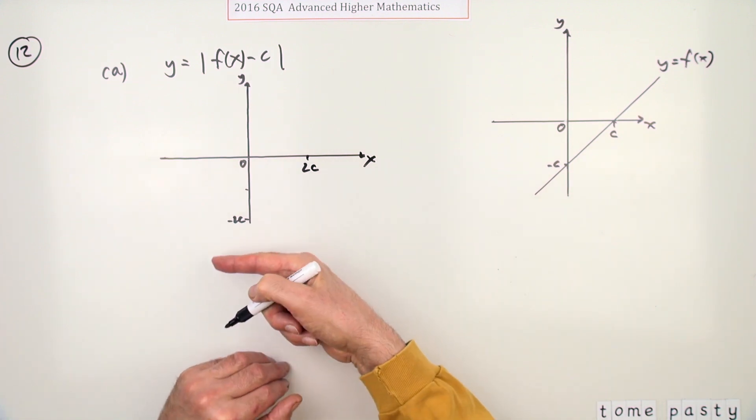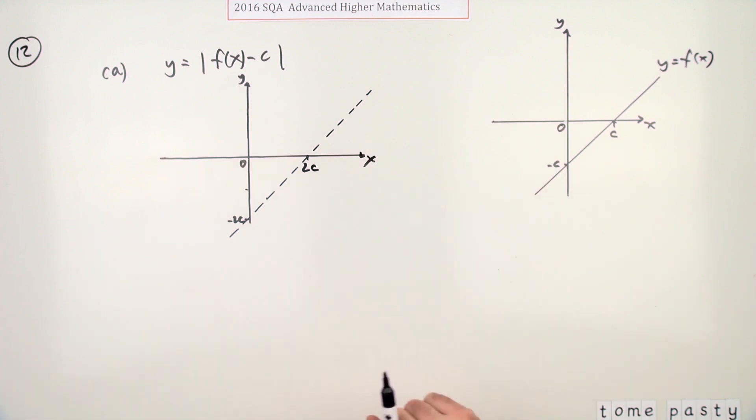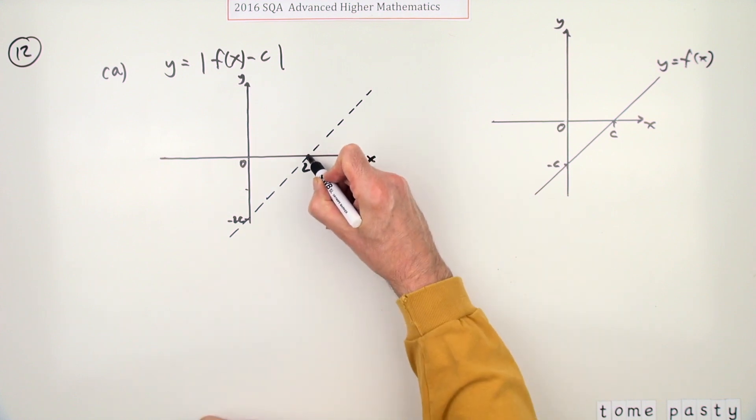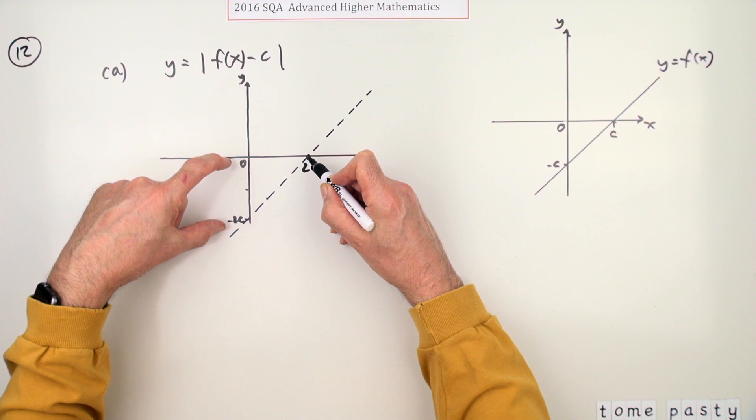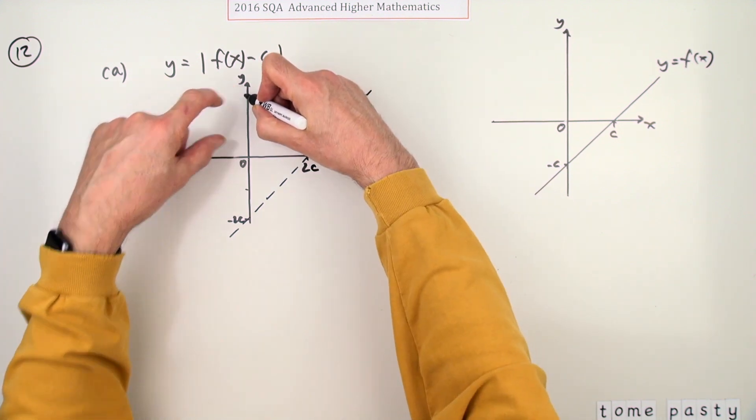So the original graph would have looked like this after shifting down c. But what this wants is the modulus, which is the absolute value. So it's fine for this part, but this part would have to be flipped up. So instead of being 2c below, it'll be 2c above.